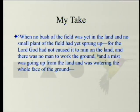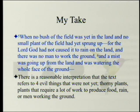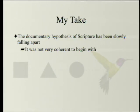Remember the text: 'When no bush of the field was in the land and no small plant of the field had yet sprung up, for the Lord God had not caused it to rain on the land and there was no man to work the ground, and a mist was going up from the land and was watering the whole face of the ground,' and then God formed man. There is a reasonable interpretation that the text refers to four things that were not yet: thorny plants, plants that require much work to produce food, rain, or men working the ground. The documentary hypothesis of the scriptures has slowly been falling apart — it was not very coherent to begin with.